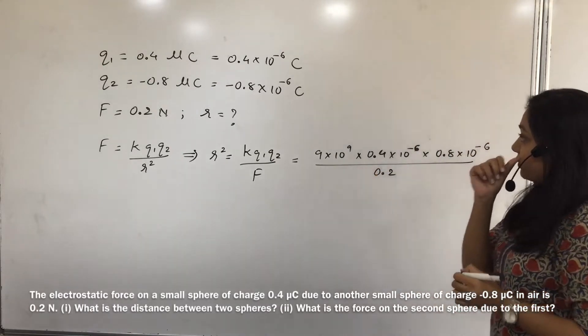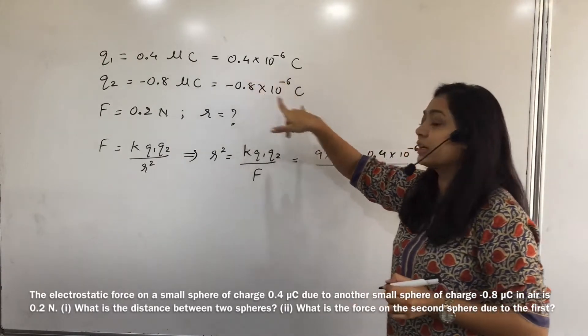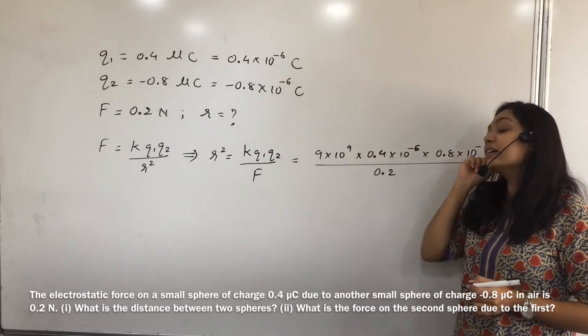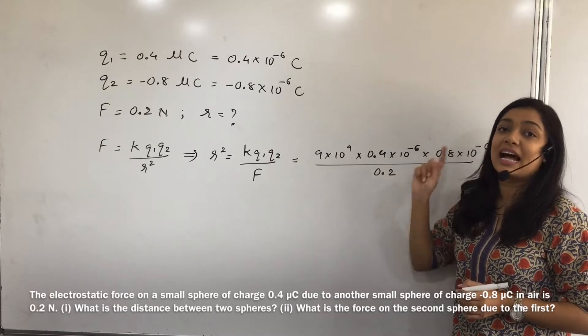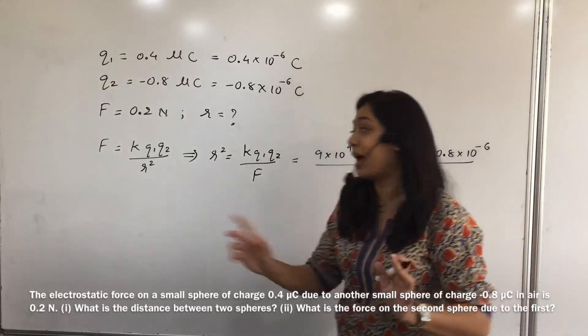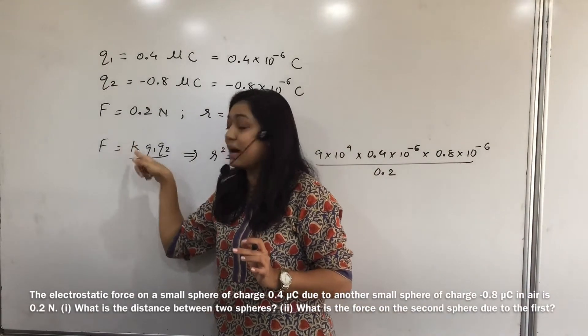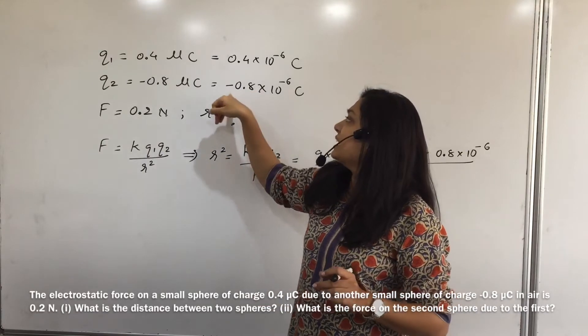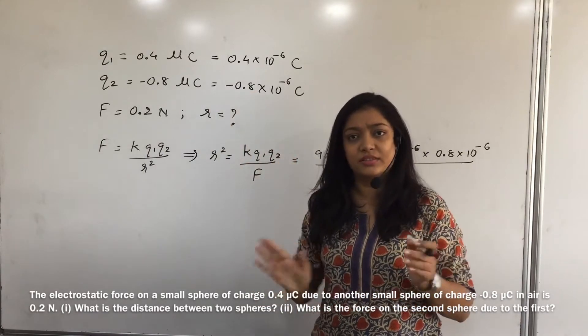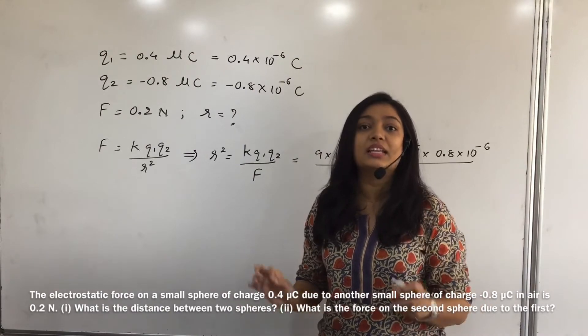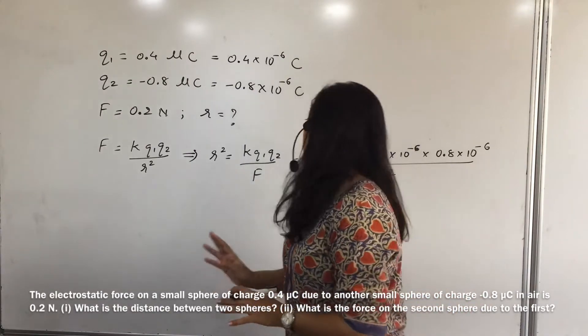Okay. Now obviously, microcoulomb convert karke already likh diya hai. So substitution mein easy rahega. 0.8, if you notice here, I have not written the negative sign. We are only considering the amount, magnitude. The amount. There is no direction that we are considering right now. So minus abhi rakha hi nahi hai. Signs we haven't put right now. We have only taken the magnitude in this.